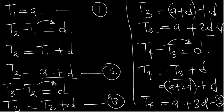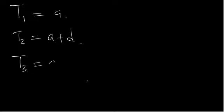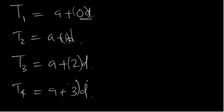Looking at the expressions: the first term is A, the second term is A plus D, the third term is A plus 2D, and the fourth term is A plus 3D. If you check the coefficients of D, the first term has 0 times D, the second has 1 times D, the third has 2 times D, and the fourth has 3 times D.